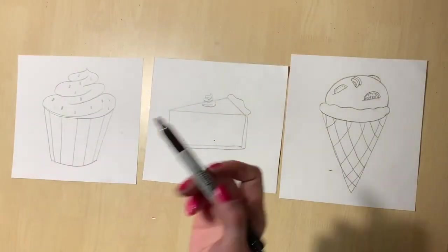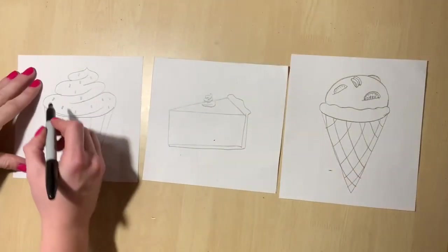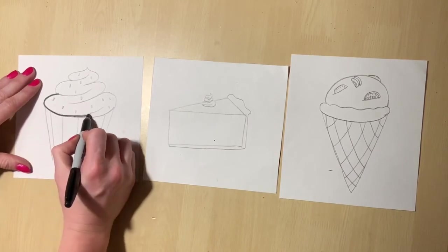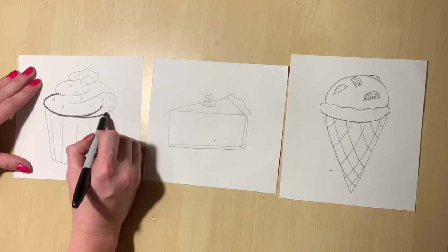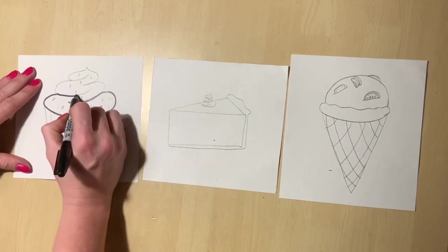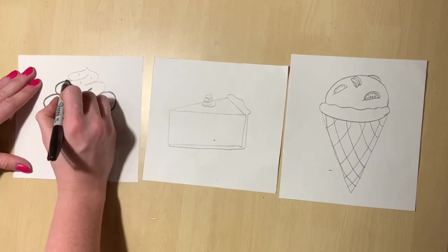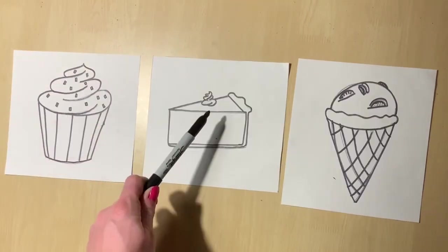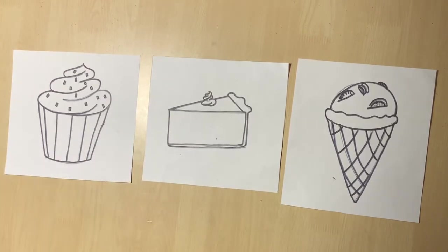When your pencil drawing is completed, it is time to take a black sharpie marker and outline or trace your dessert. Make sure that you do the entire dessert, including all the toppings. Okay, I'm going to magically make all of these desserts outlined. There we go.